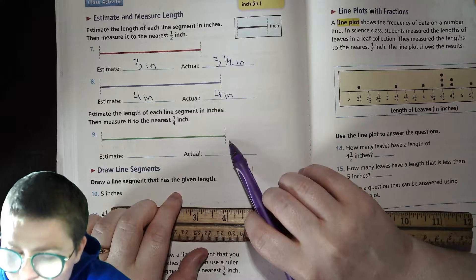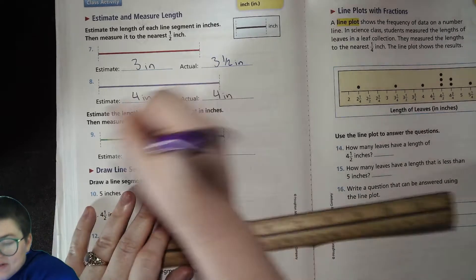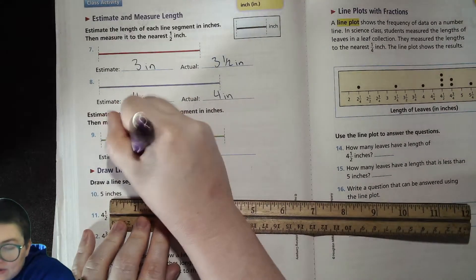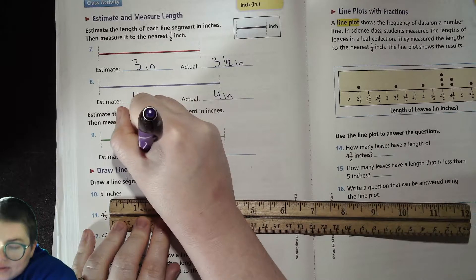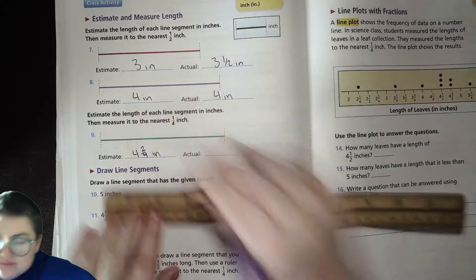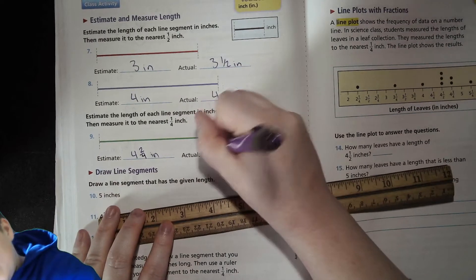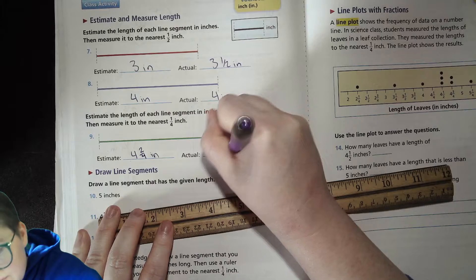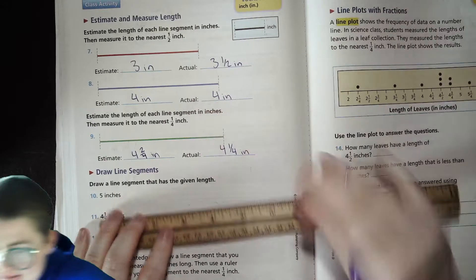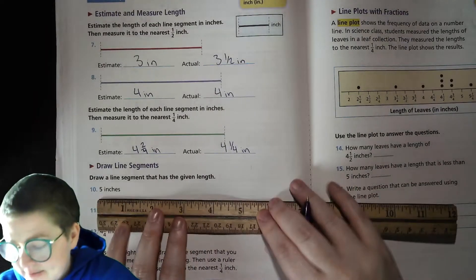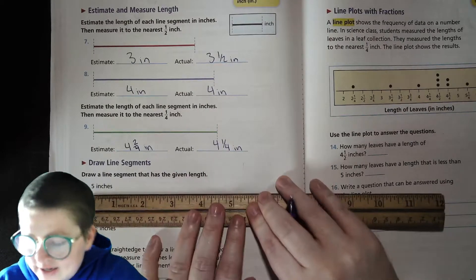So estimate. This is probably like four and a quarter or maybe four and a half. Let's see. So I'll say four and two fourths, which is the same as a half inches. And no, it's just four and one quarter. Four inches.